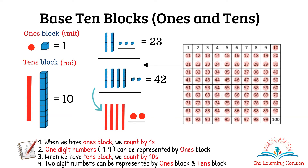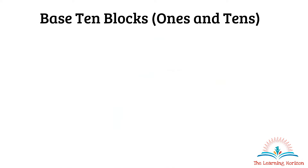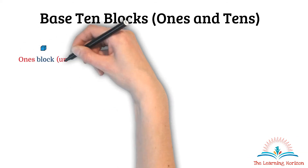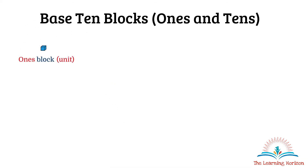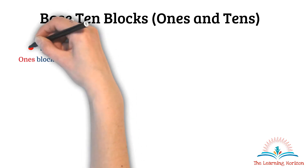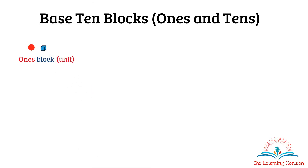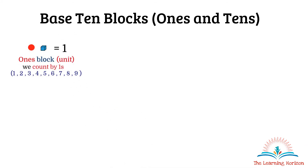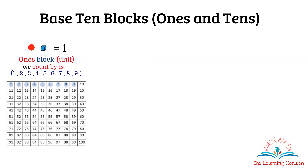Let us summarize our learning so far. For base 10 blocks: this is a ones block, which is also called a unit. It can also be represented as a dot. The value of each ones block is equal to one, so when we have a group of ones blocks we always count by ones. All single-digit numbers can be represented by ones blocks.